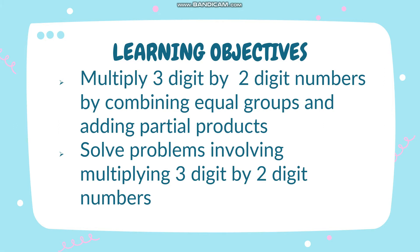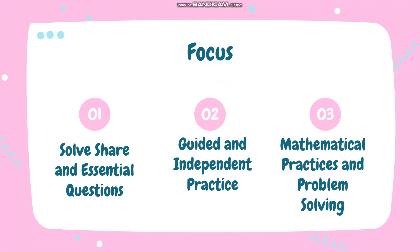Here are the learning objectives for today's lesson. You're going to multiply three-digit by two-digit numbers by combining equal groups and adding partial products. Solve problems involving multiplying three-digit by two-digit numbers. Our focus for today is to answer the solve and share and essential questions, guided and independent practice, and the mathematical practices and problem solving.